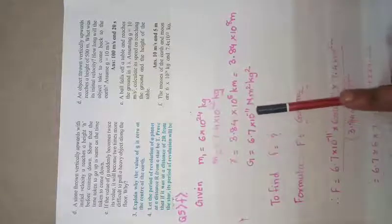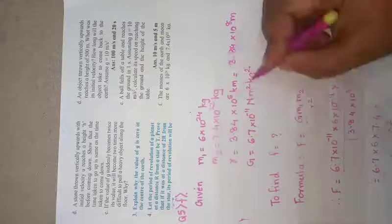G is 6.7×10⁻¹¹ Newton meter square per second square. To find F, we have to find the gravitational force. The formula to find gravitational force is G×m₁×m₂/r².